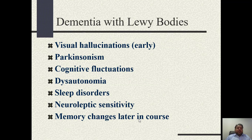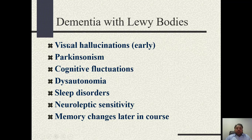Dementia with Lewy bodies (DLB) has four cardinal features. Number one is parkinsonism — signs including bradykinesia, rigidity, or tremors. Number two is visual hallucinations. Number three is REM sleep — rapid eye movement — sleep disorders. Number four is dementia. These are the cardinal features of dementia with Lewy bodies.